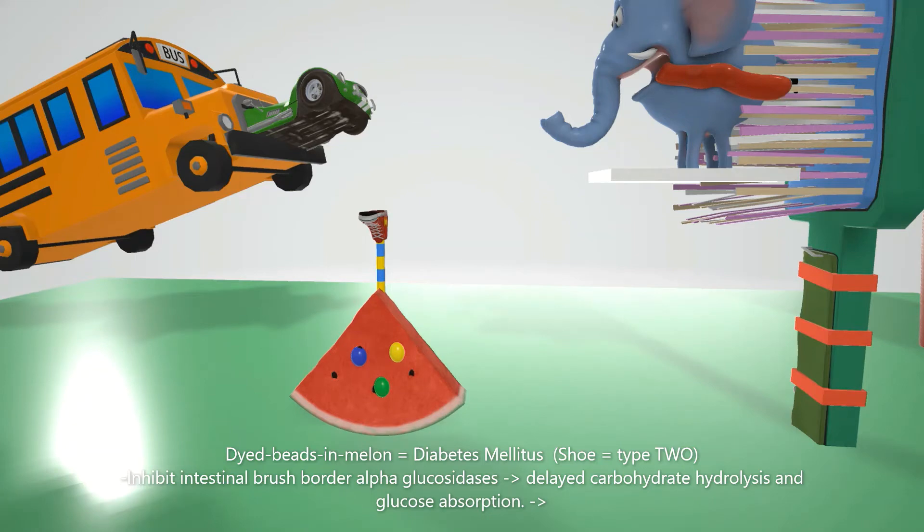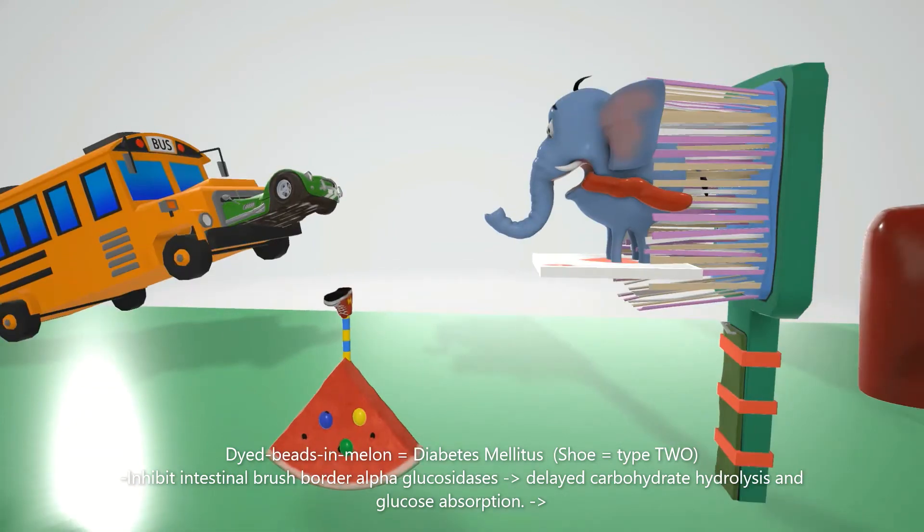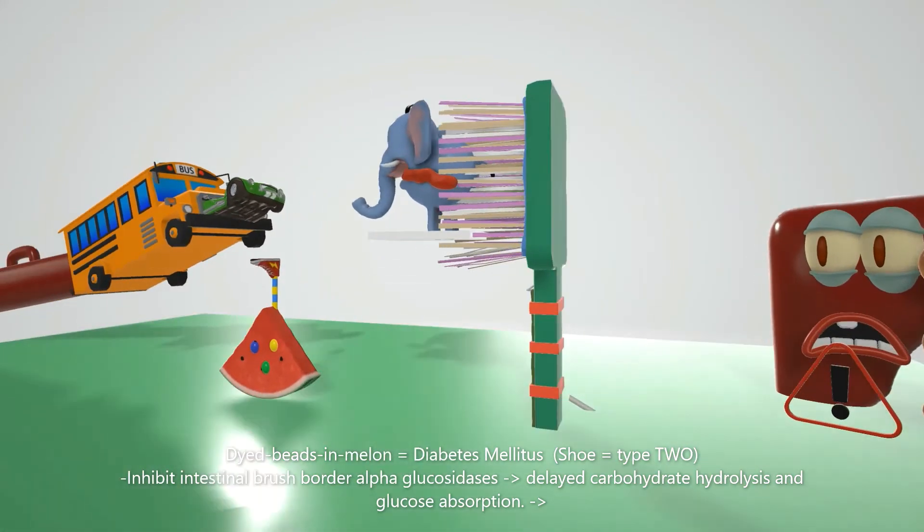Alpha glucosidase inhibitors are used in the treatment of diabetes mellitus type 2, and they do that by—well, this elephant over here you might have noticed was inside this brush. This reminds us of the intestinal brush border. Alpha glucosidase is—this is where the alpha glucosidases are. So alpha glucosidase inhibitors will of course inhibit these enzymes, and this is what leads to the delayed carbohydrate hydrolysis and glucose absorption.